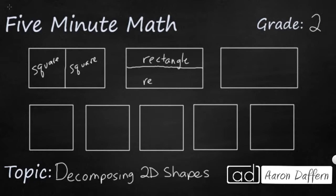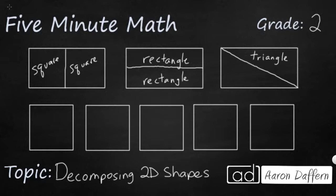Another way to cut this rectangle in half is with a diagonal line. I'm still cutting it in half because I have two equal parts, but now you see that these are both triangles — and not just any type of triangles, these are actually right triangles, simply because they have a square corner. If you ever have a triangle that has a square corner like this one does, it's called a right triangle. So you can put two right triangles together and get a rectangle.